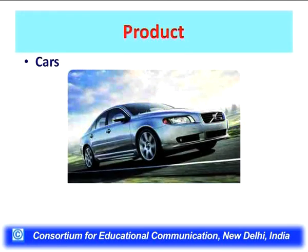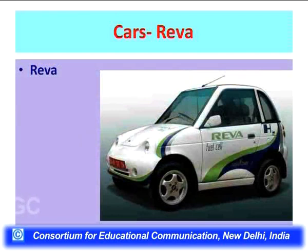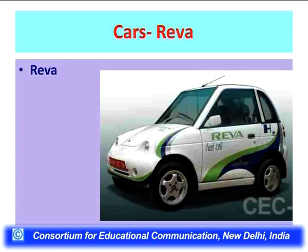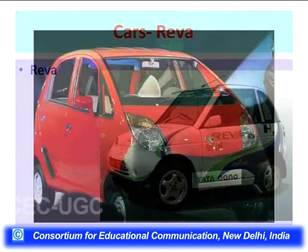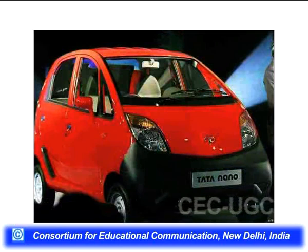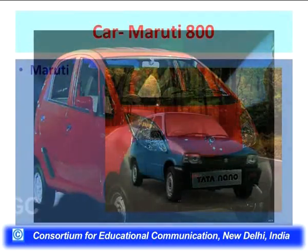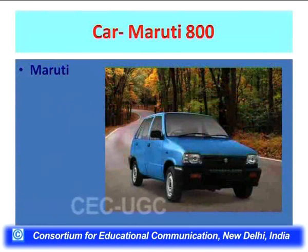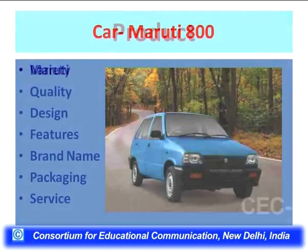Some products like cars come in different types, makes and specifications for different segments of customers and are priced differently. Product gives: variety, quality, design, features, brand name, packaging, and after-sales service. These are the key dimensions of a product.